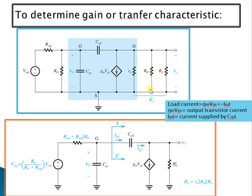Using Thevenin's theorem, we obtain the equivalent Thevenin voltage as V_signal_dash and the resistance as R_signal_dash, which is a parallel combination of R_signal and RG. The capacitance CGS is maintained as is, CGD is maintained as is, and the current GM × VGS is maintained, while the three parallel resistances are simplified to RL dash.